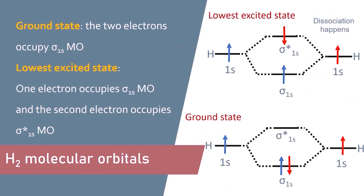Let's look at the example of molecular orbitals of hydrogen molecules. The combination of the atomic orbitals of two hydrogen atoms — each atom has one electron in a 1s orbital — results in the formation of two molecular orbitals: in-phase sigma 1s and out-of-phase sigma star 1s. In the ground state, the two electrons occupy the sigma 1s molecular orbital. In the lowest excited state, one electron remains in sigma 1s and the other moves to the higher-energy sigma star 1s, with no net bonding, which results in dissociation.